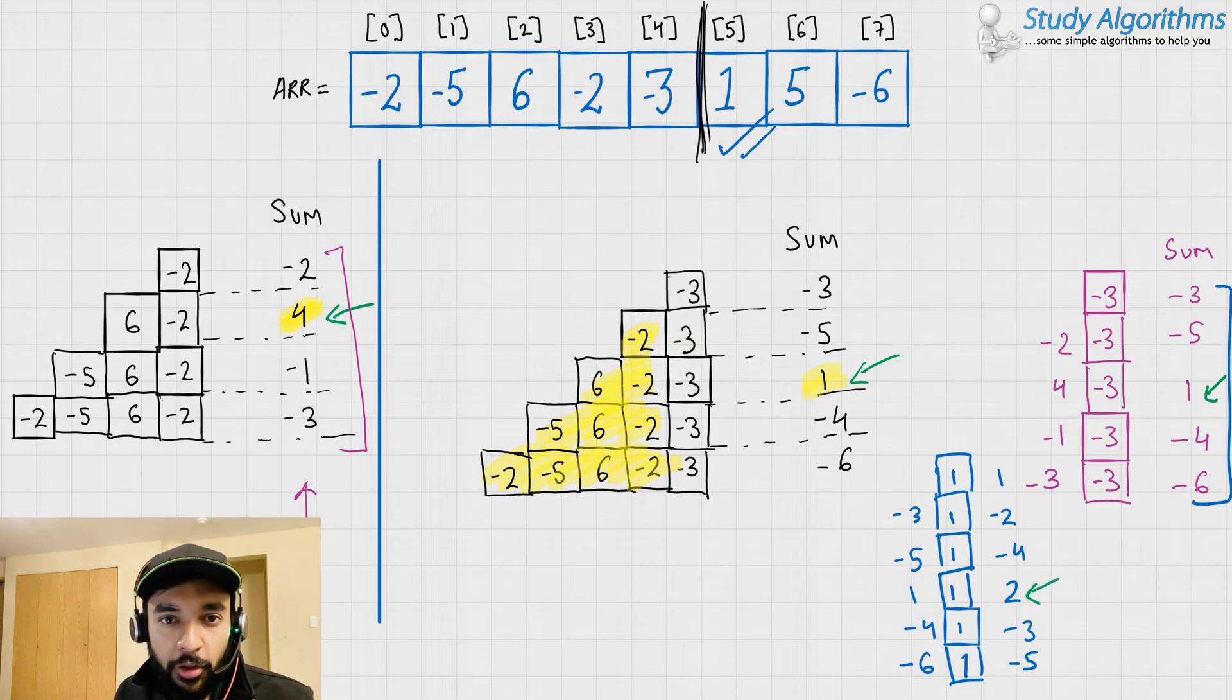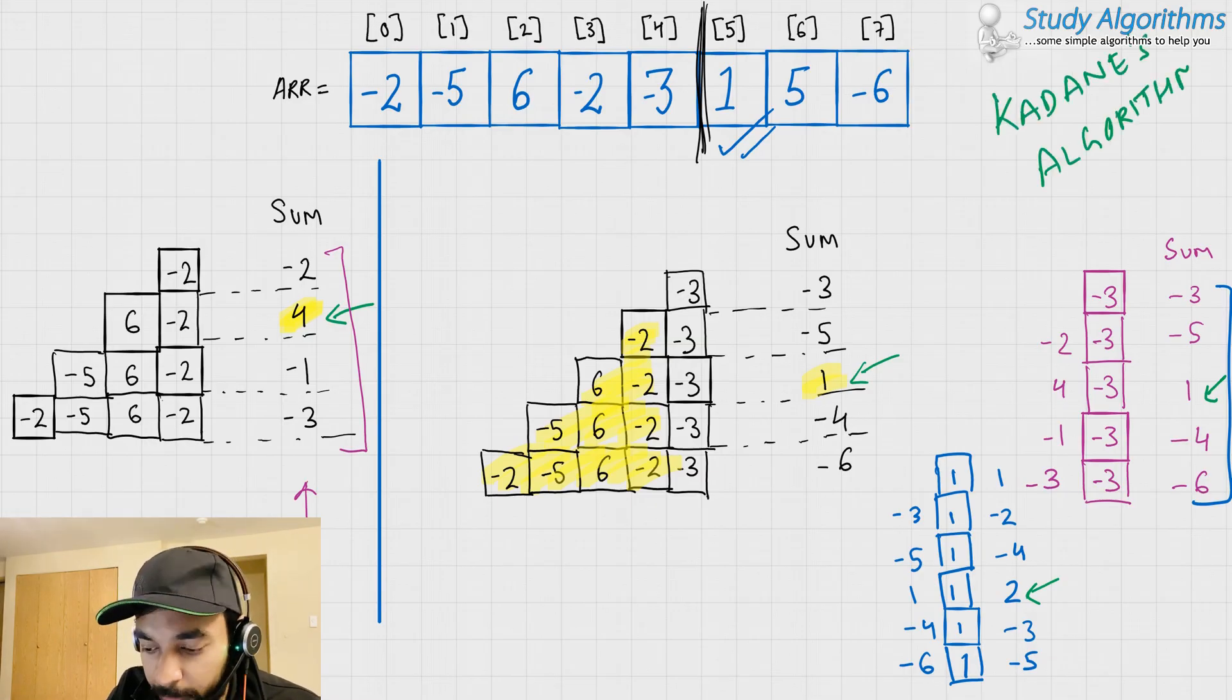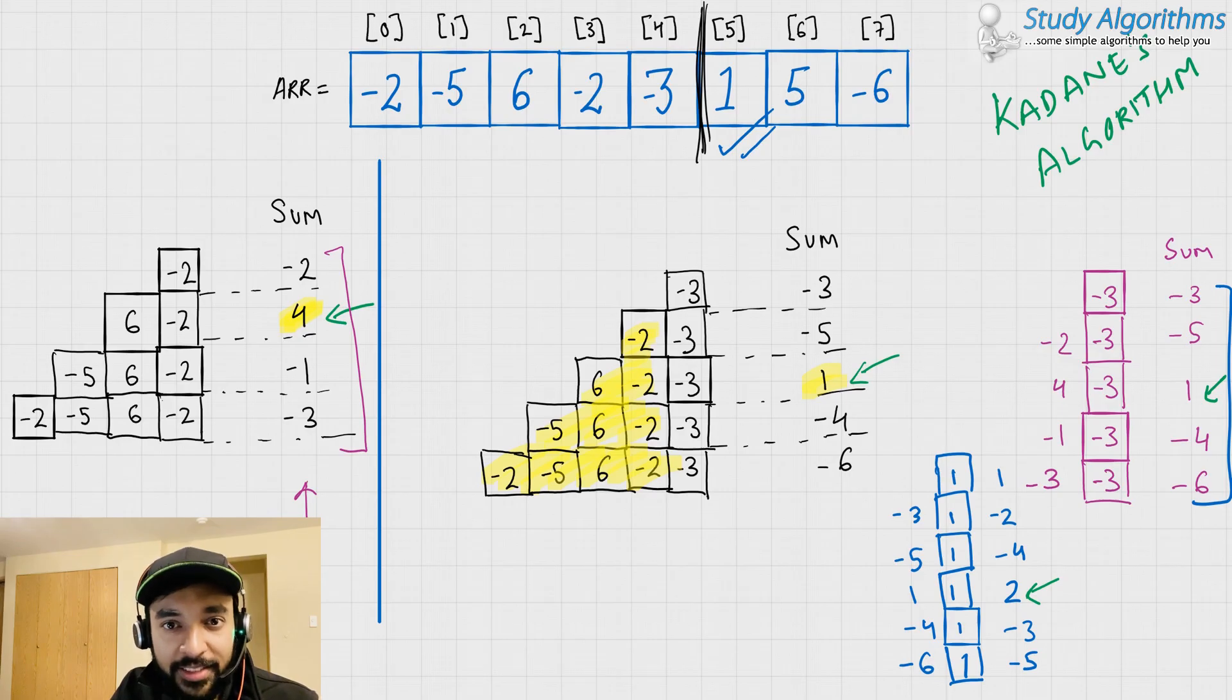The approach we are using over here is called memoization. It means that we are already using our derived result to evaluate our further problem. This is a very common example of dynamic programming. And as some of you may have guessed, this is also called as the Kadane's algorithm. Let us try to do a dry run and see how this exactly works in our code.